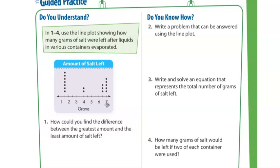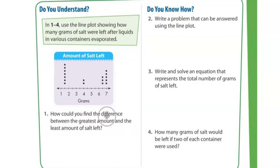Let's look at number one on page 40. It says: how could you find the difference between the greatest amount and the least amount of salt? A key clue word here is 'difference.' We're focusing on the numbers that have dots above them — not necessarily which amount had the most dots. Looking at these quantities, we have values from one all the way to seven, and it's important to focus only on the numbers that actually have dots above them.